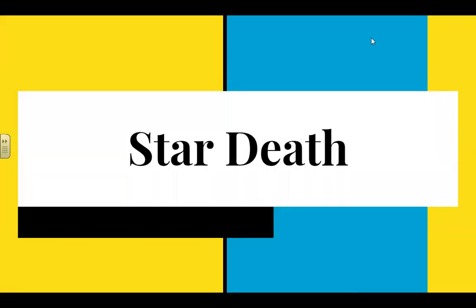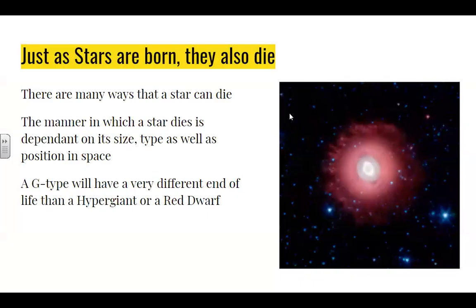Star death. Stars are born, they also die — they live their lives. The manner in which a star dies is dependent on its size, its type, as well as its position in space relative to other things. A G-type star will have a very different end of life than a hypergiant or a red dwarf.